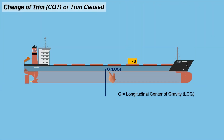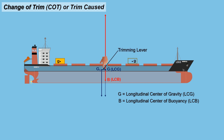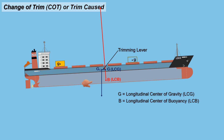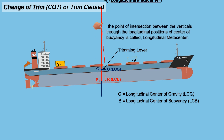What happens to the ship's longitudinal center of gravity when a weight is shifted longitudinally? Assuming the ship is floating on even keel, the ship's longitudinal center of gravity (G) is directly above the longitudinal center of buoyancy in the same vertical line. When a weight is shifted aft, G moves aft to G1, parallel to and in the same direction as the weight being shifted. As the longitudinal center of gravity and buoyancy become separated, a trimming lever is created, causing the ship to trim by the stern. The ship trims until the longitudinal center of buoyancy is directly below the new G. The point of intersection between the verticals through the longitudinal positions of the center of buoyancy is called the longitudinal metacenter.